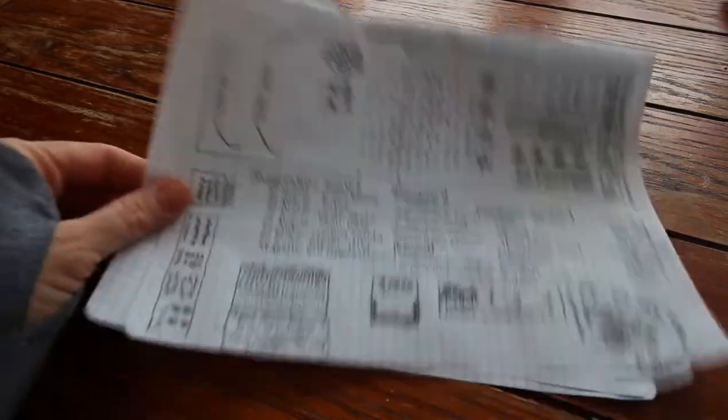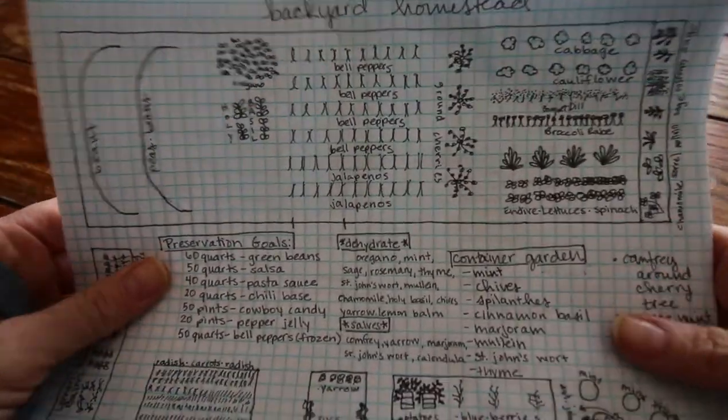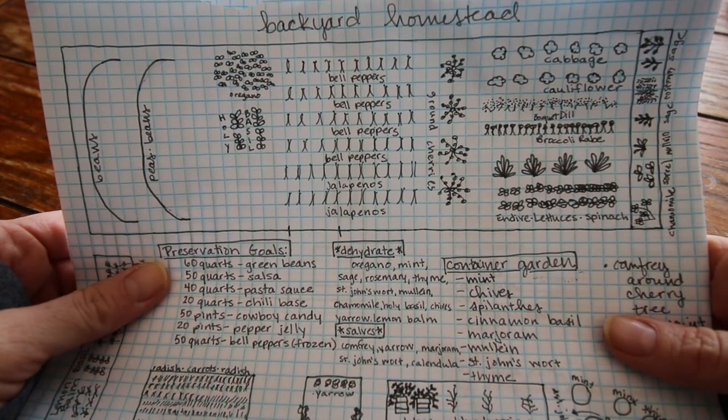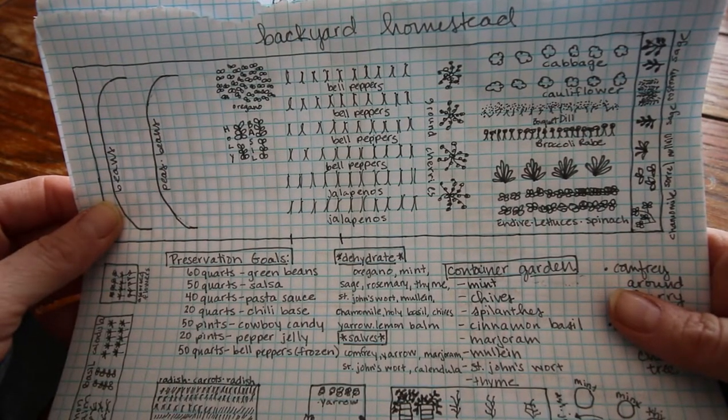Okay so here is the plan for the backyard homestead. If you notice here there are no tomatoes and some other things that I usually grow. I'm gonna put all that out on the farm.